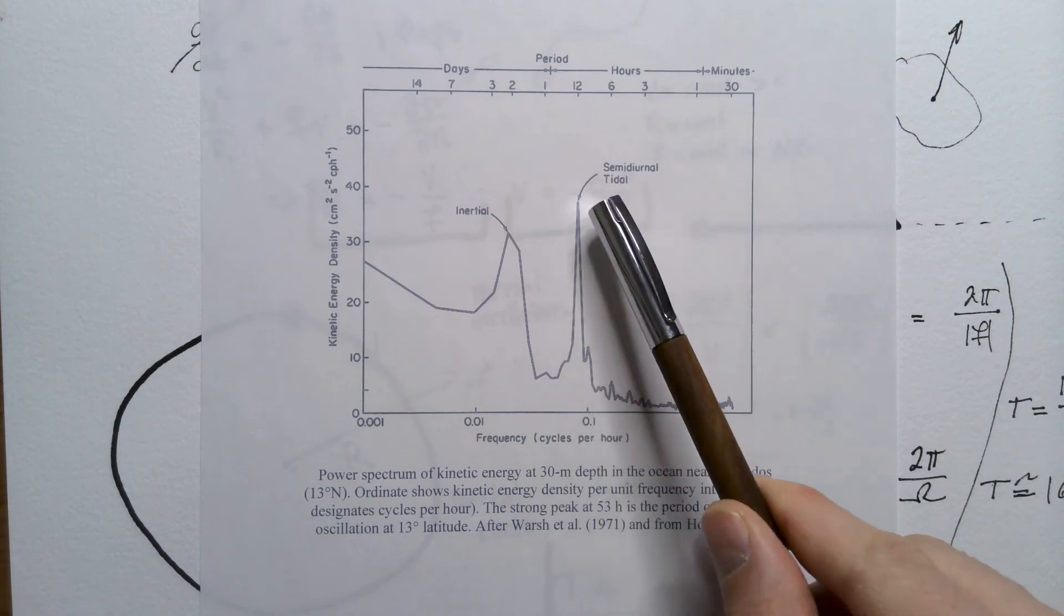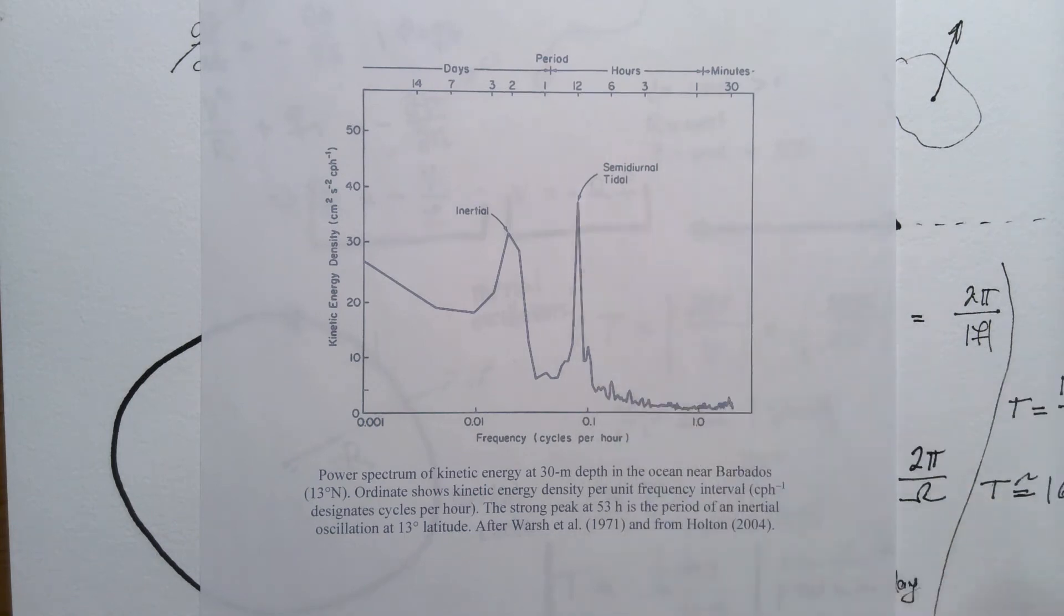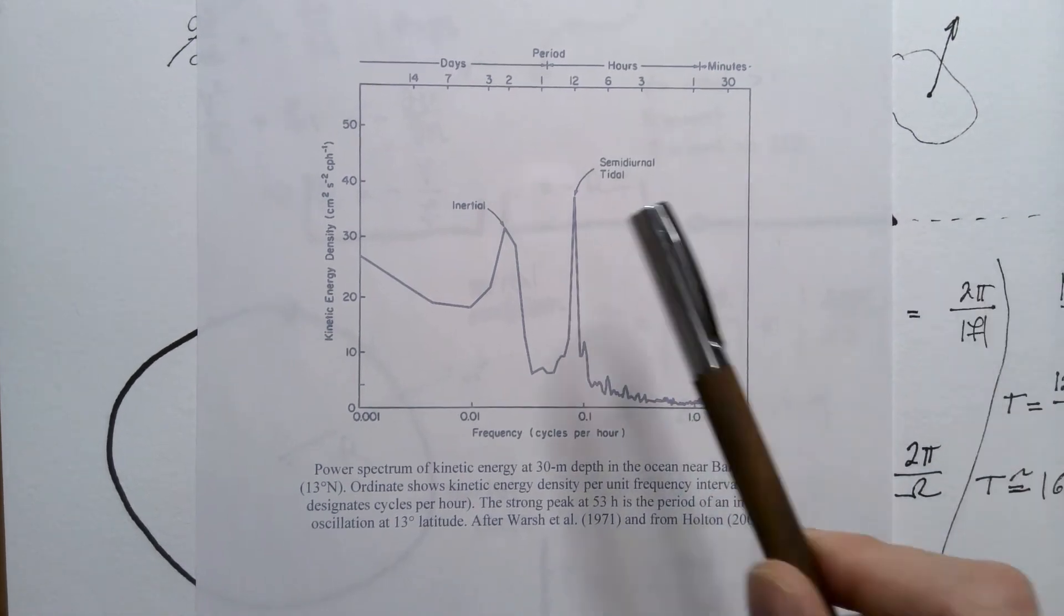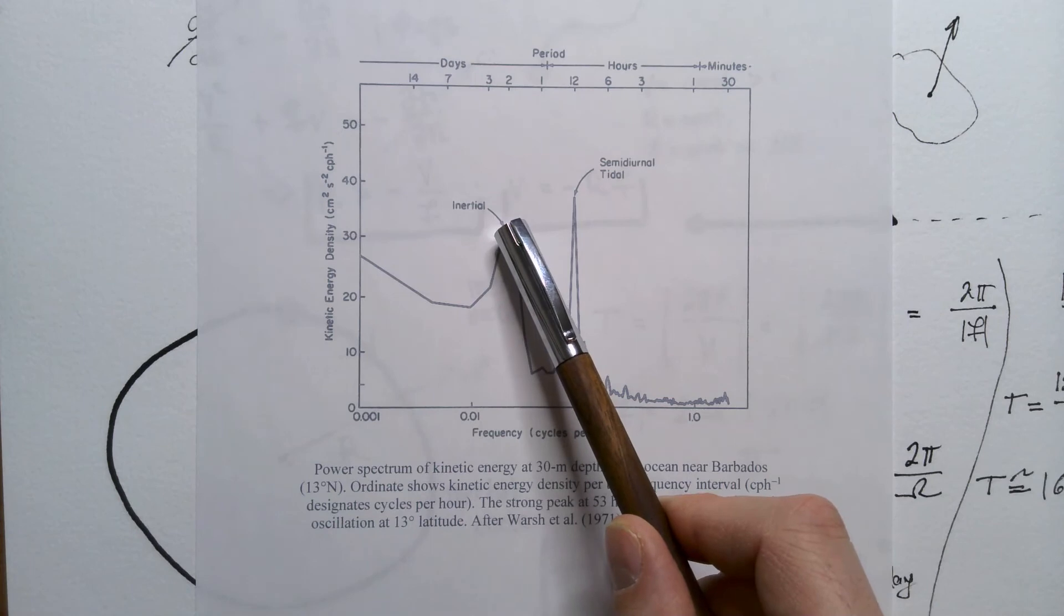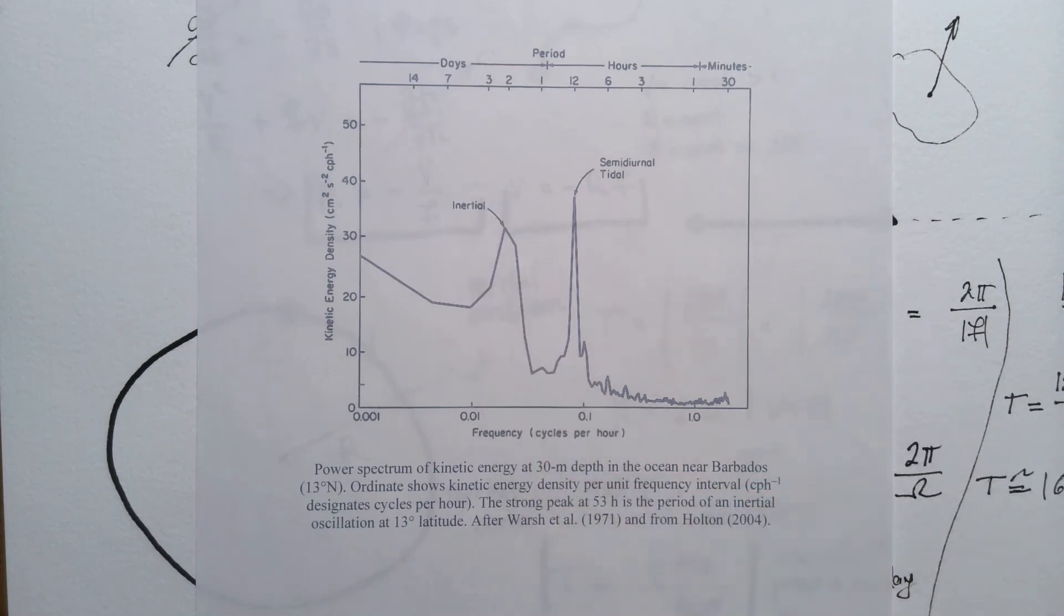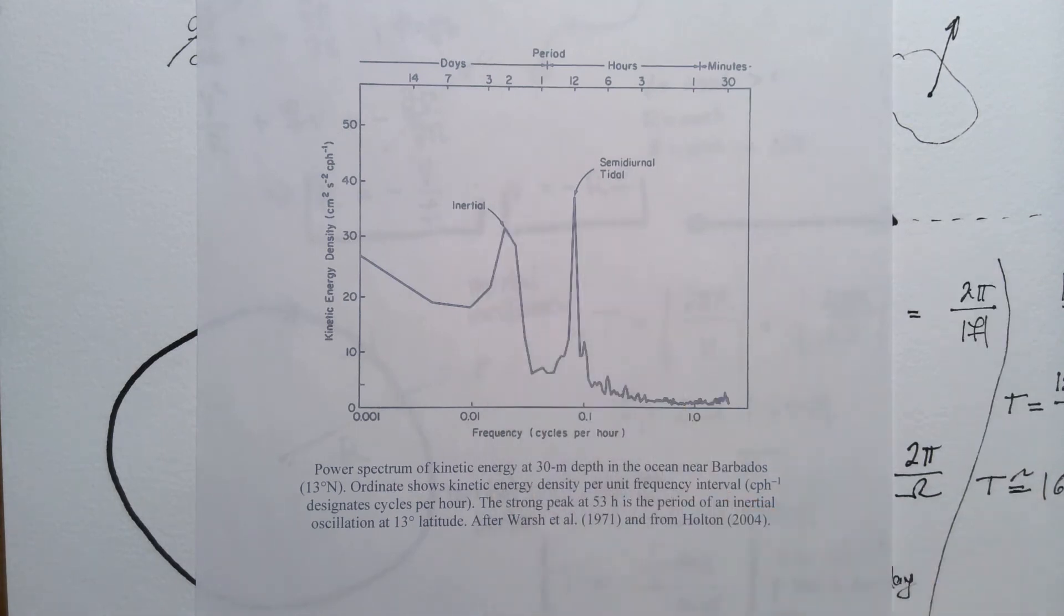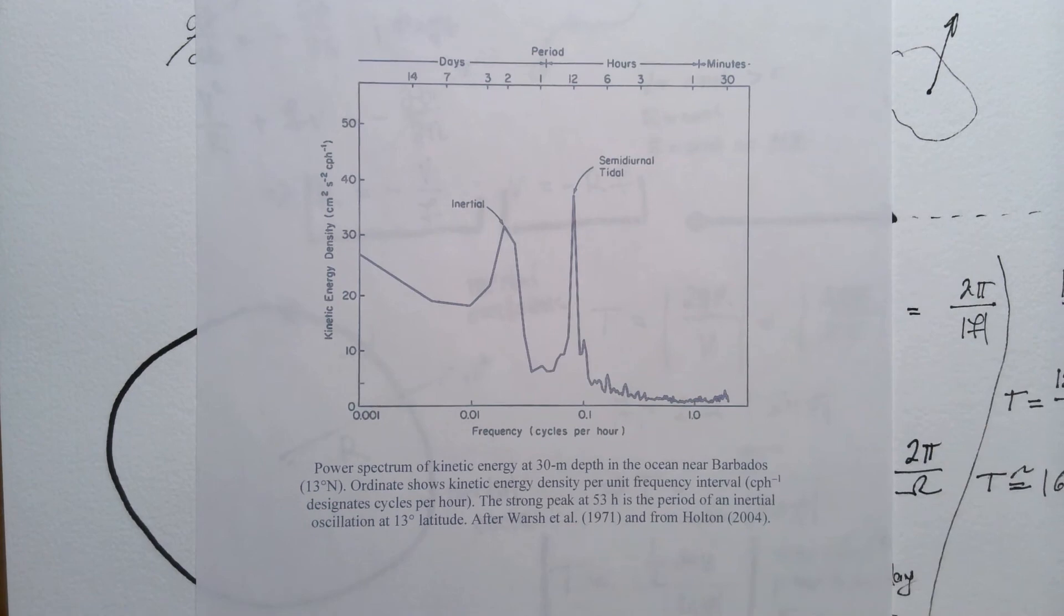We can see that most of the energy is stored in a semi-diurnal tidal motion, which is not unexpected, but there is also peak in energy associated with inertial oscillations. Now, some of you, rightfully so, could say, but the fact that somebody put arrow over here doesn't necessarily mean this is really inertial oscillation. How do you know this is really inertial oscillation and not something else?